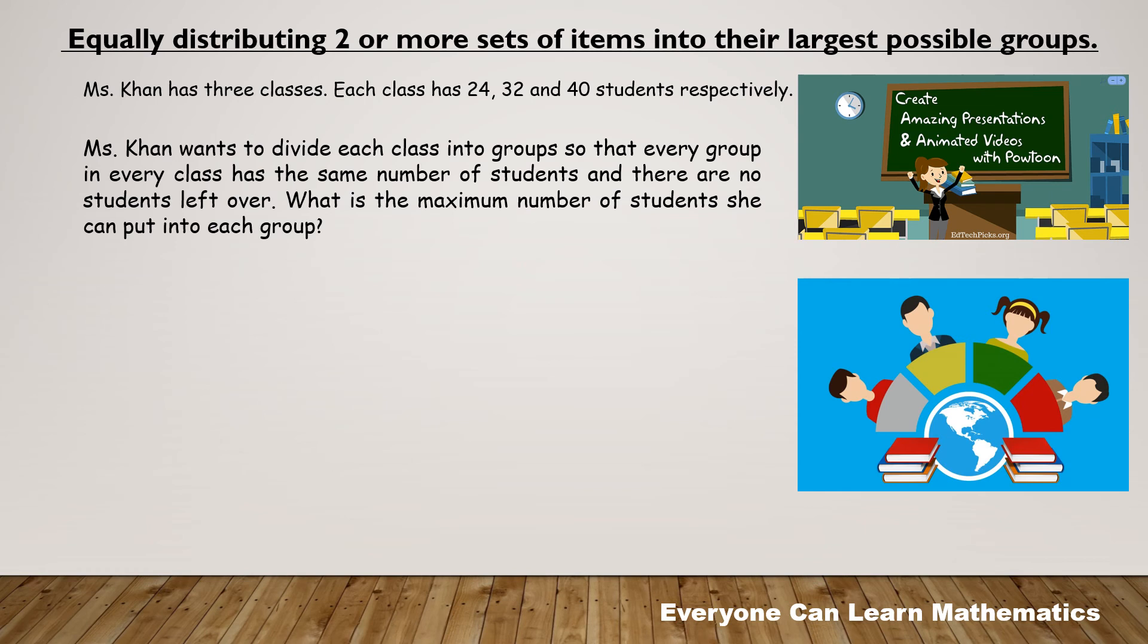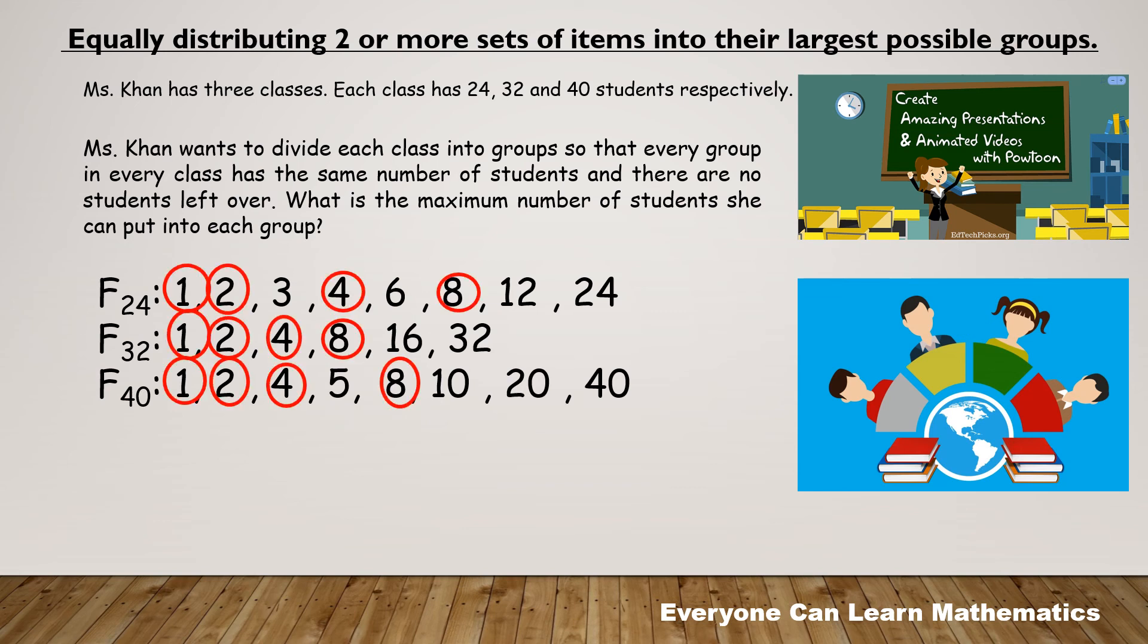So we list down all the factors of the numbers and circle the common factors. By looking at the common factors, we can see eight is the highest number that can be taken as HCF. Miss Khan needs to divide each of the classes into groups of eight students.